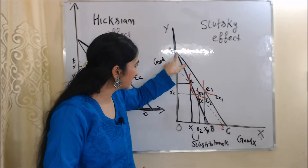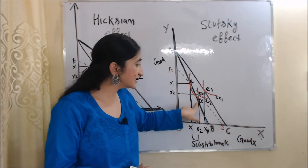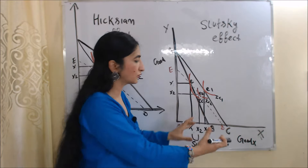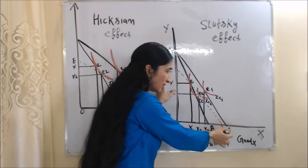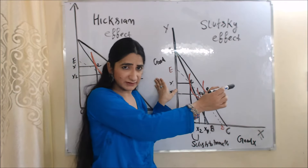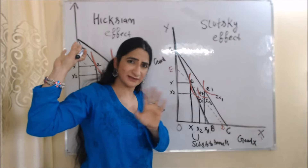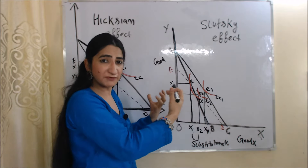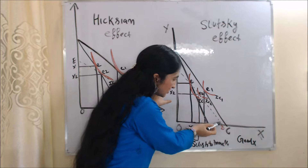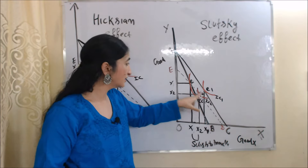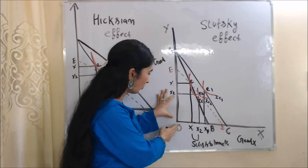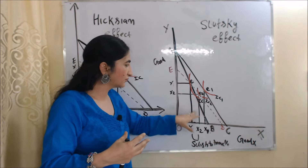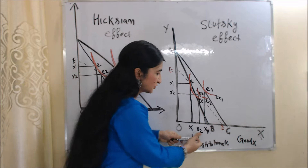AB is our initial budget line, IC is the initial indifference curve, and E is the initial consumer equilibrium point. As the price of X falls, the budget line shifts outward on the side of X. AC is the new budget line, IC1 is the new indifference curve, and E1 is the new consumer equilibrium point. Now we reduce the money income of the consumer; as we do so, his budget line shifts inward. The dotted line ED represents the new budget line. E2 is the new consumer equilibrium point, where the consumer reduces quantities of Y from OY to OY2, but increases quantities of X good from OX to OX2 — meaning the consumer substitutes X good for Y good. This X to X2 is called the substitution effect.